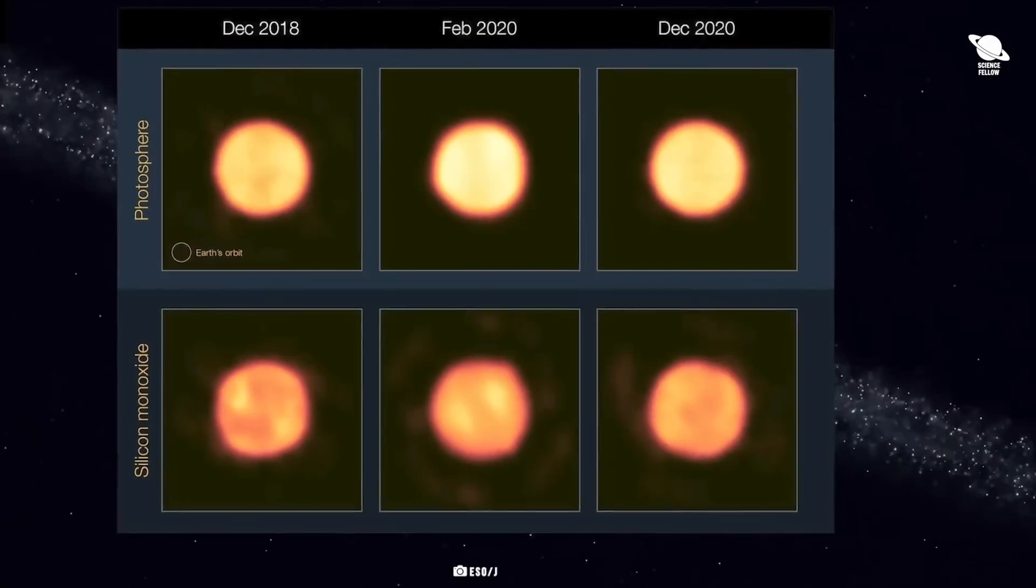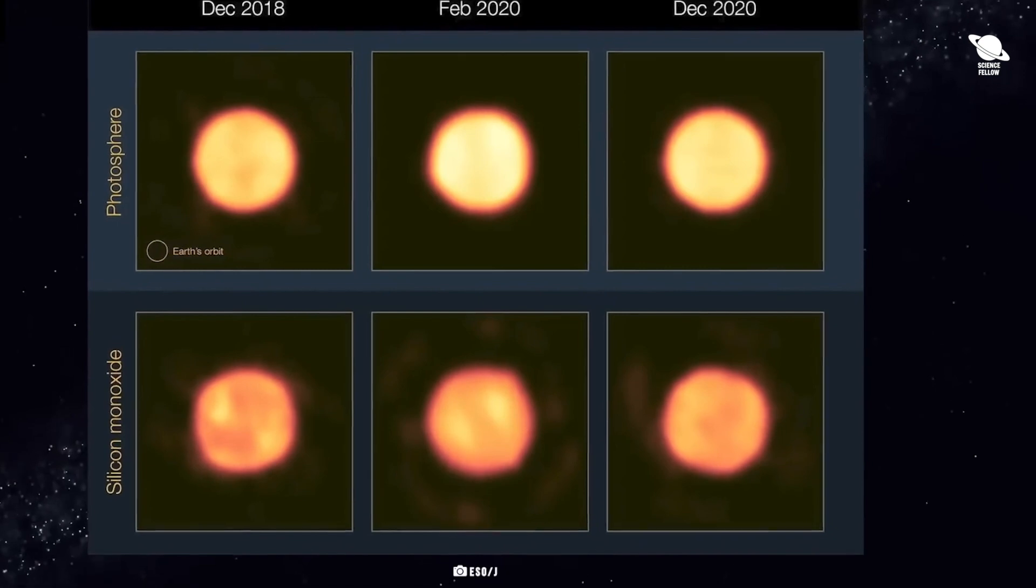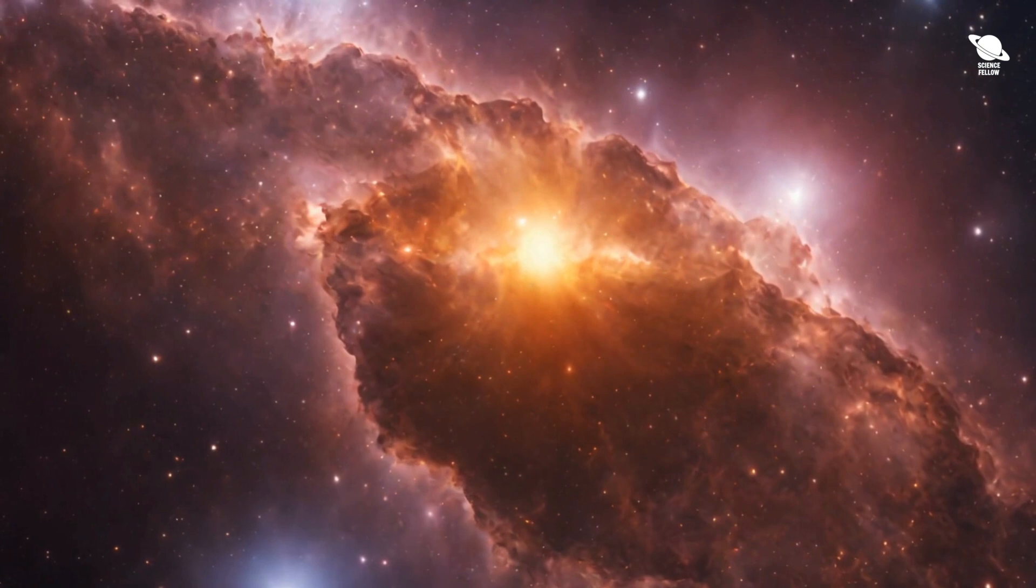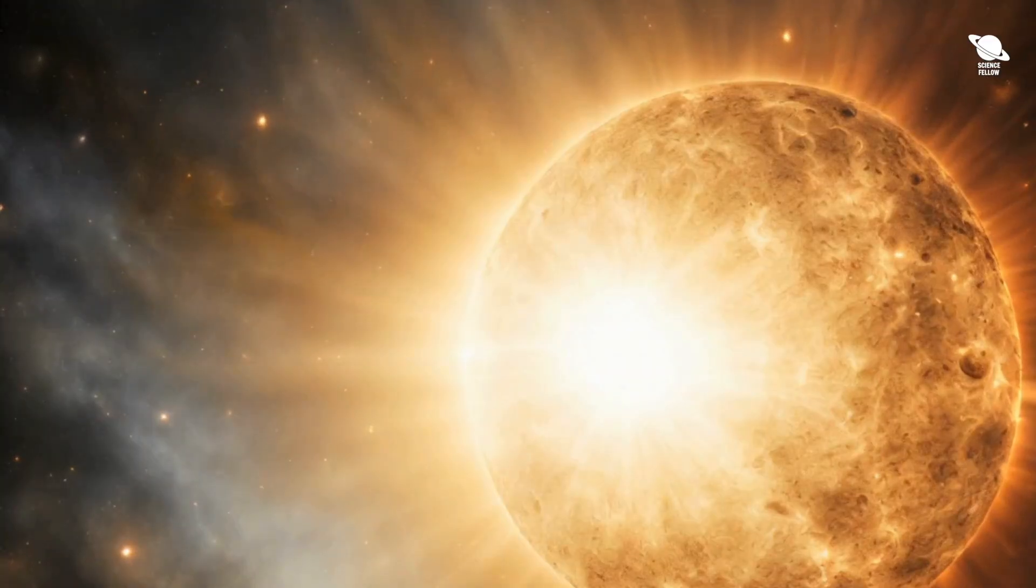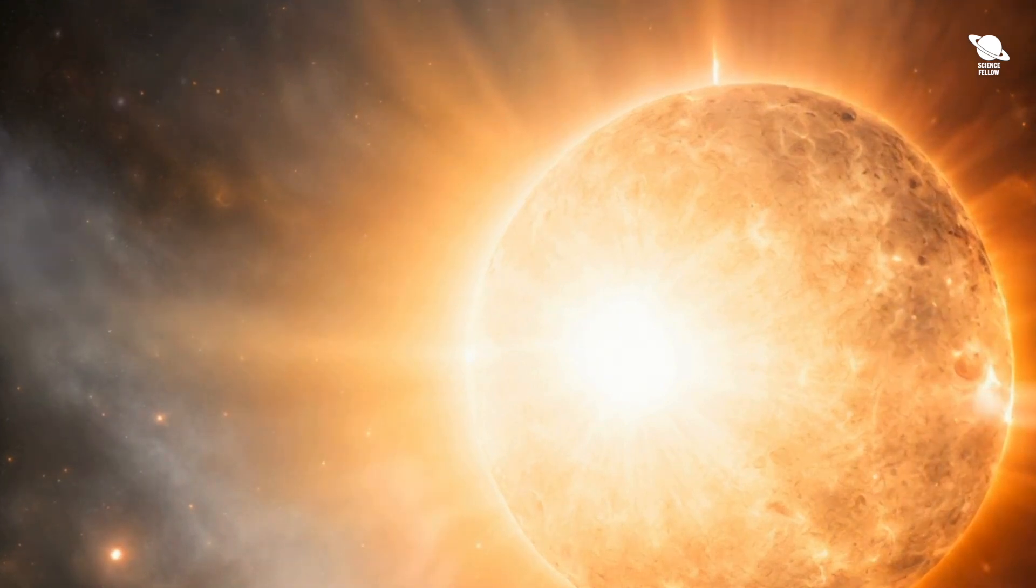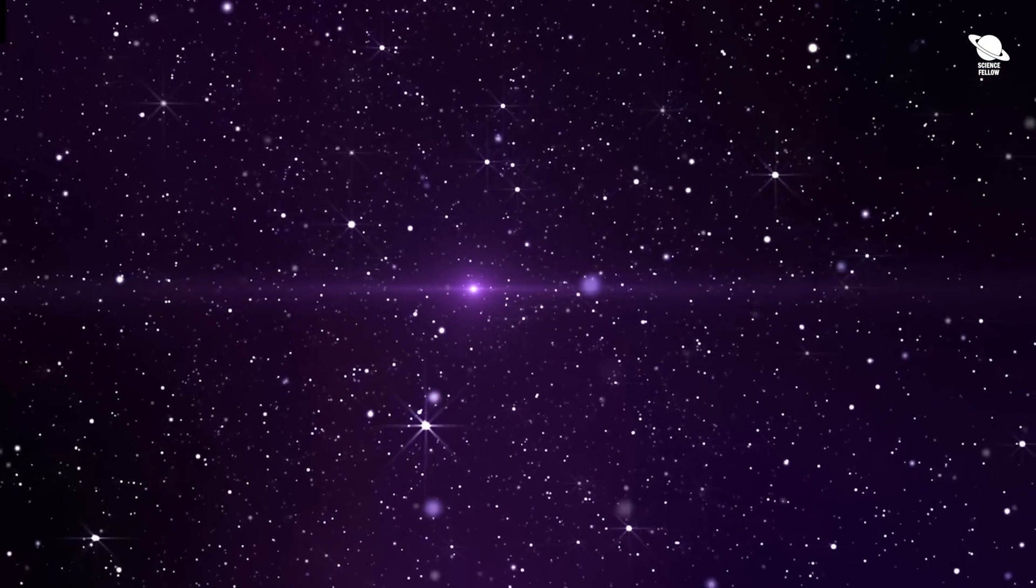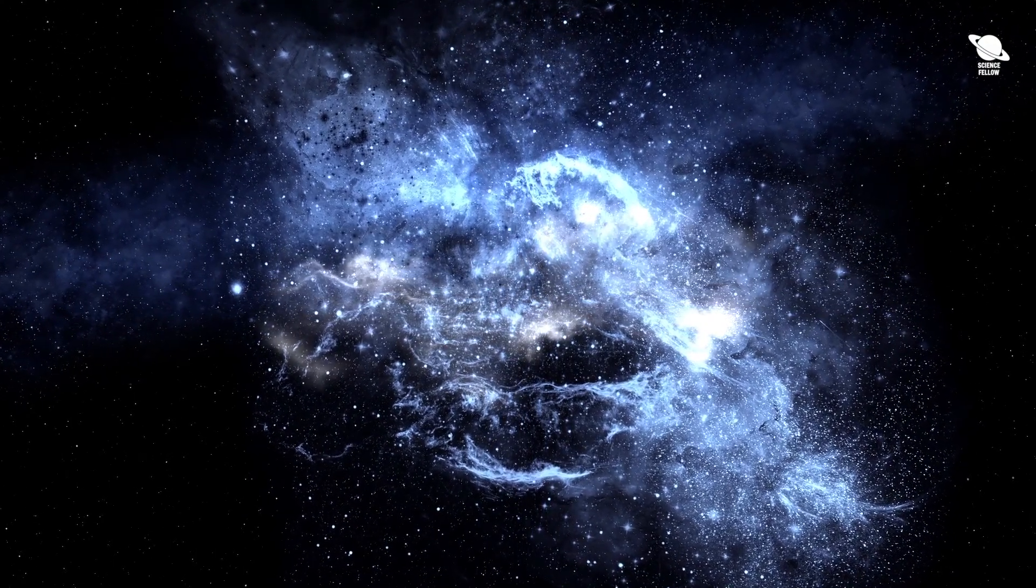The high-resolution images from SPHERE supported this theory. Moreover, these images also indicated that the same dust that eventually contributes to forming new star systems can actually originate very close to stars. Here's the intriguing part: despite the star appearing to dim in visible light, it actually appeared brighter in infrared light. This helped illuminate the mysteries surrounding this cosmic event.